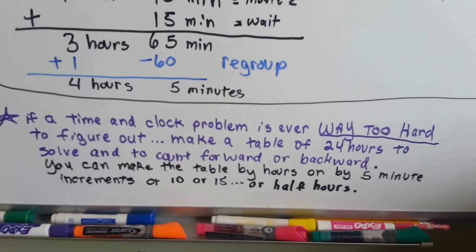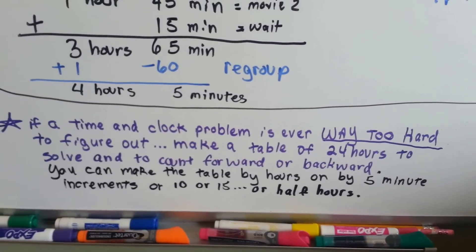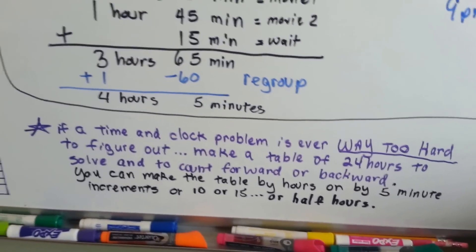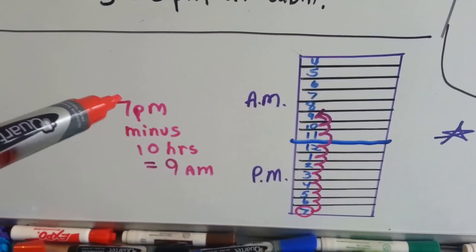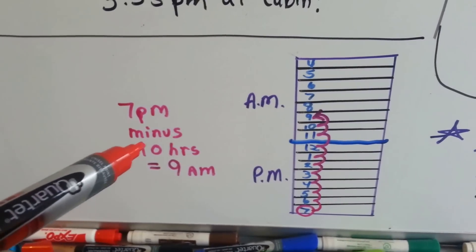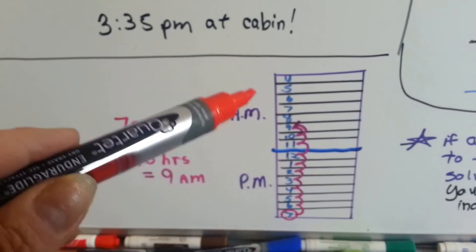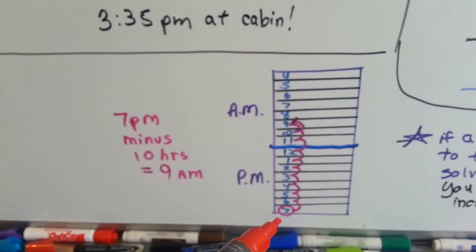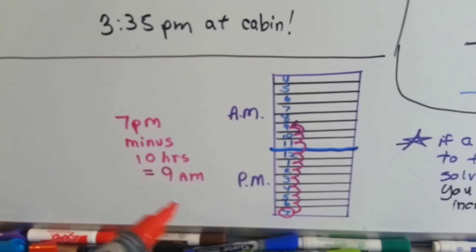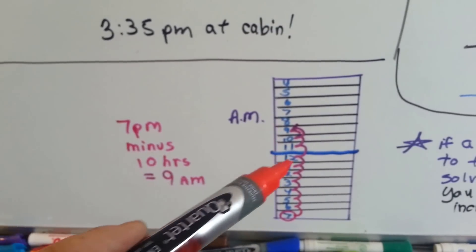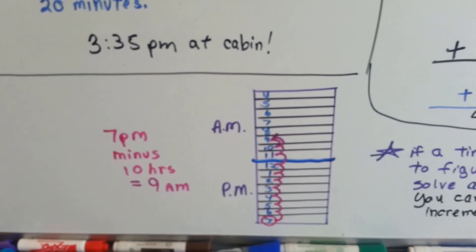You can make the table by hours or by five minute increments or by hours and minutes or half hours. If we needed to figure out from 7 p.m. to go back 10 hours, what we could do is just make a chart and we could draw a line where it changes from p.m. to a.m. We start at 7 p.m. and we count back 10. And we see that we get to 9 a.m. because it crosses over the line. So see, sometimes a chart can help you instead of a round clock.